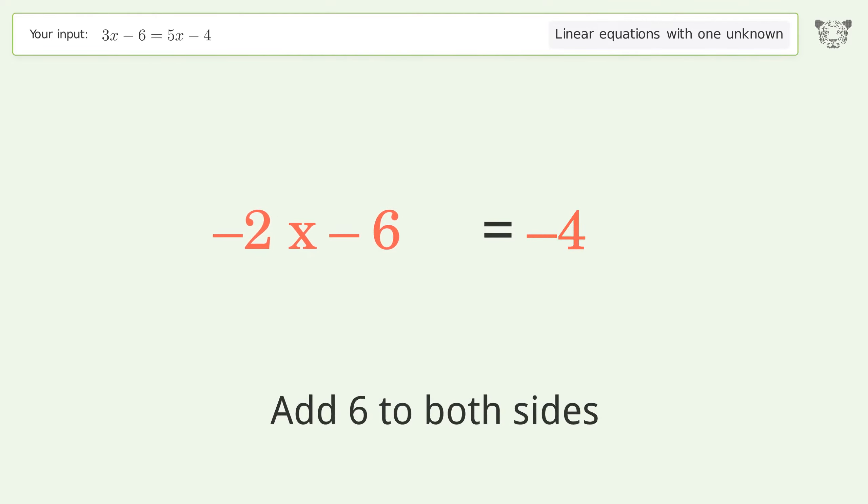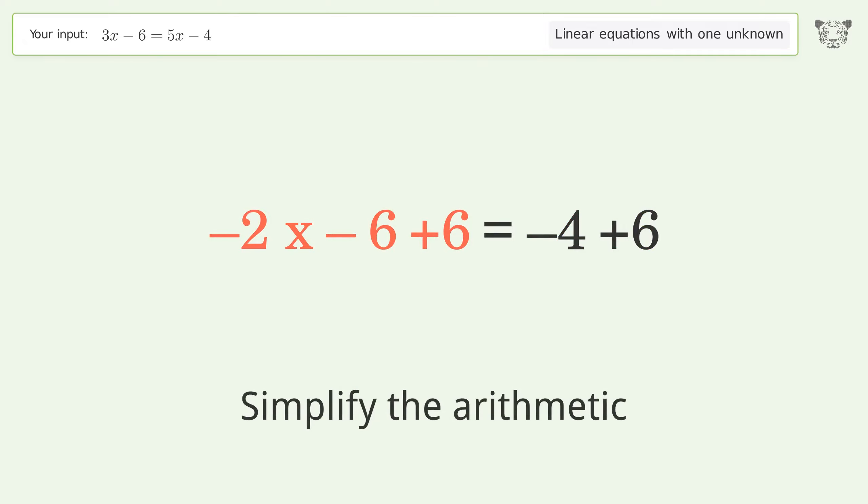Group all constants on the right side of the equation. Add 6 to both sides. Simplify the arithmetic.